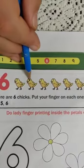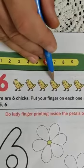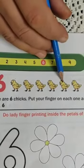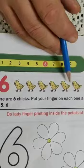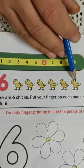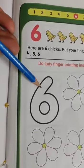1, 2, 3, 4, 5, 6. There are 6 chicks. Now what is this? Number 6.